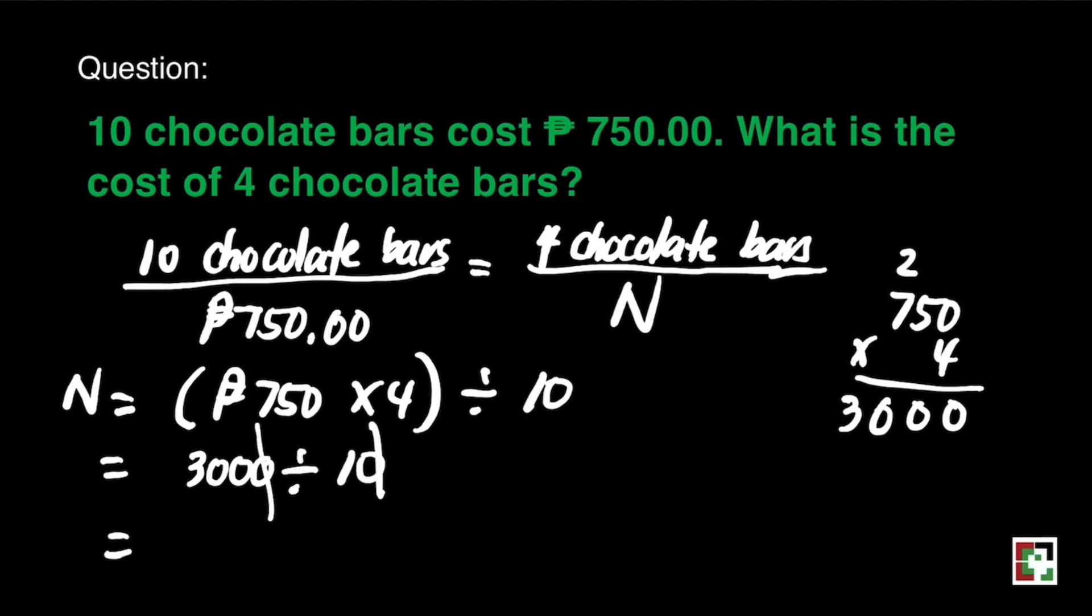3,000 divided by 10. We can do cancellation of the two zeros there. What's left is 300 divided by 1. And our final answer is 300 pesos. It means we will pay 300 pesos for 4 chocolate bars.